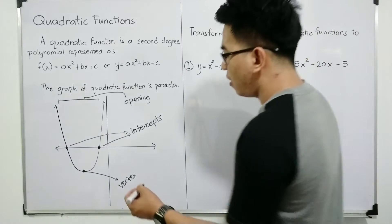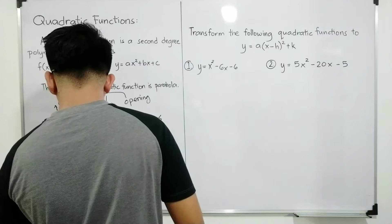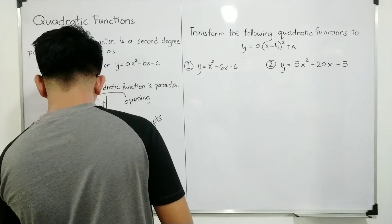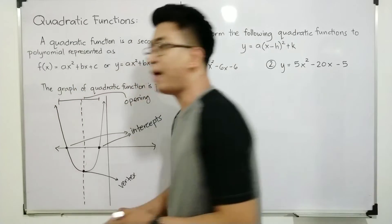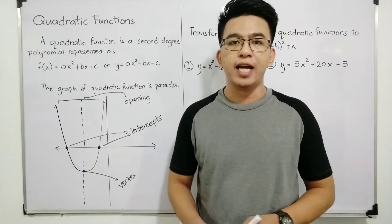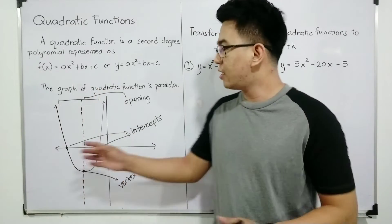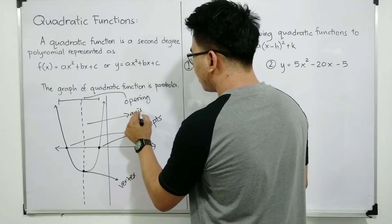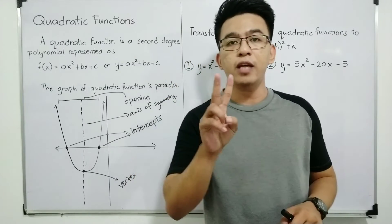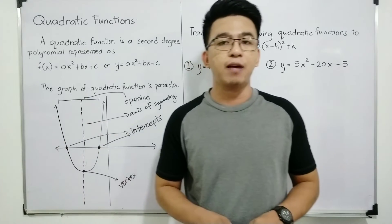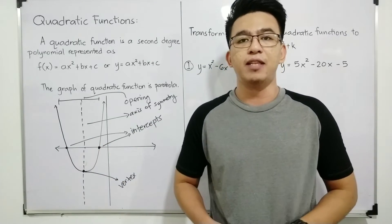Now let's move on to the next part. We also have this line, wherein it is a perpendicular line that passes through the vertex. The purpose of this line is that it serves as the mirror image of the parabola. It is called the axis of symmetry, wherein it will create two equal parts of the parabola — the right side and the left side. That is your axis of symmetry.